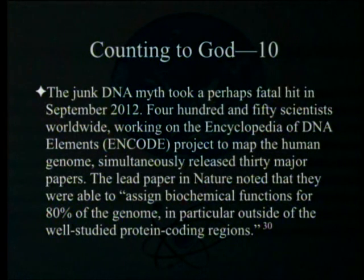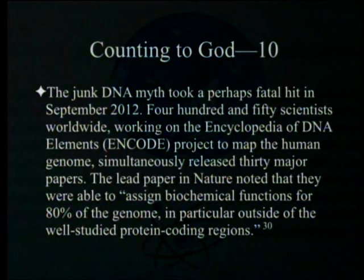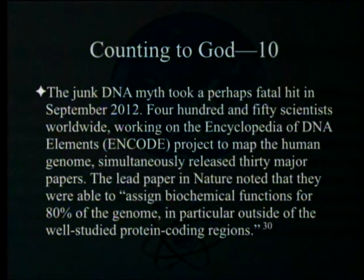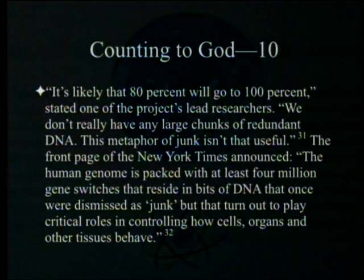The junk DNA myth took a perhaps fatal hit in September 2012. 450 scientists worldwide working on the ENCODE project — the Encyclopedia of DNA Elements — simultaneously released 30 major papers. The lead paper in Nature noted they were able to assign biochemical functions for 80% of the genome, particularly outside the well-studied protein-coding regions. One of the project's lead researchers stated it's likely that 80% will go to 100%, adding: 'We don't really have any large chunks of redundant DNA; the metaphor of junk isn't that useful.'